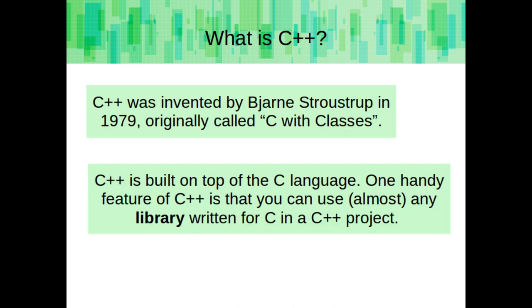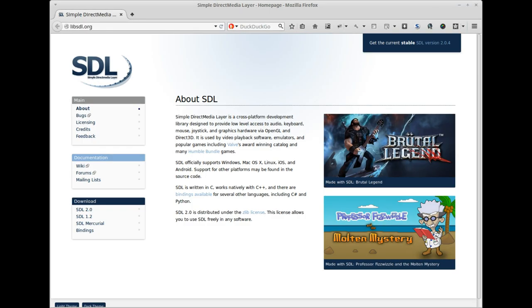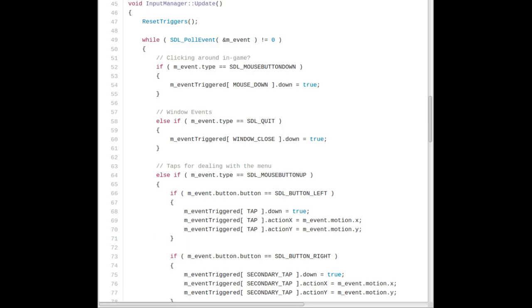C++ was invented by Bjarne Stroustrup in 1979. It was originally called C with classes. C++ is built on top of the C language. One of the handy features of C++ is that you can use almost any library written for C in a C++ project. A library is basically code that somebody has written for reuse. For example, a popular cross-platform game programming library is SDL, which allows users to load and handle images and audio, handle input, and other handy things that you might not want to program from scratch.